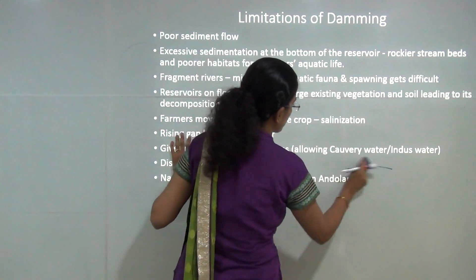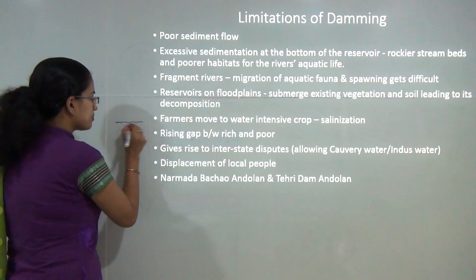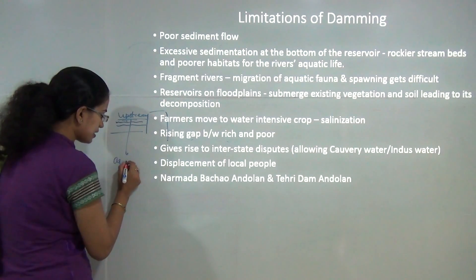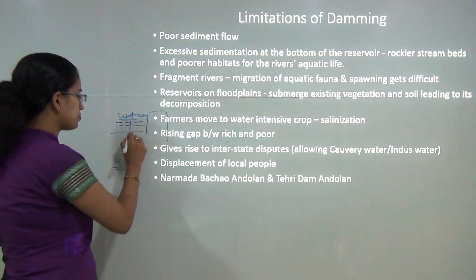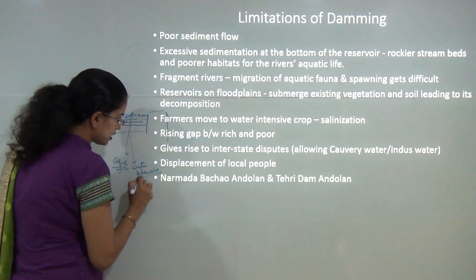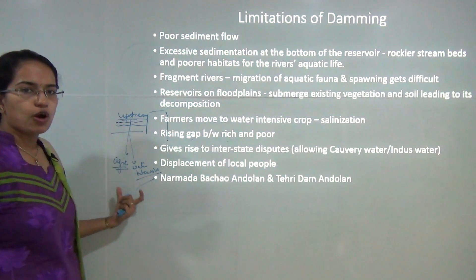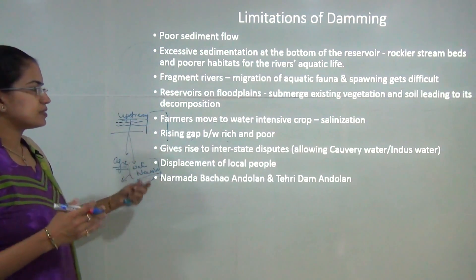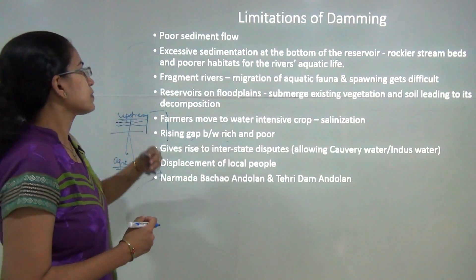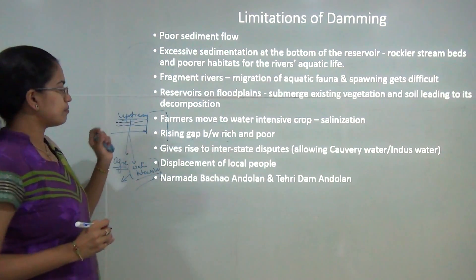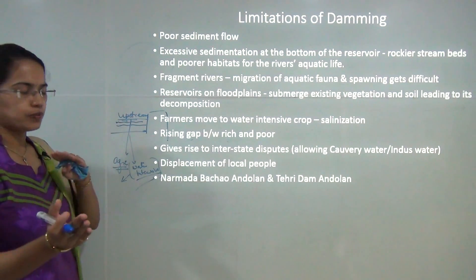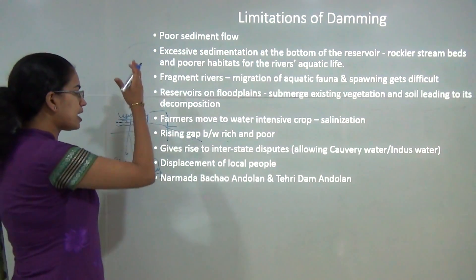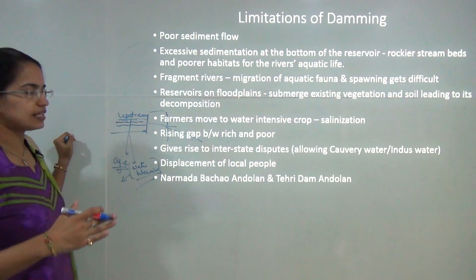Since you are creating a dam on a naturally flowing river, immense water is stored in the upstream area and used in nearby agricultural lands. Growing water-intensive crops like rice close to multi-valley projects leads to problems of salinization. Many dams lie between state borders, causing interstate disputes. Excessive sedimentation takes place at the bottom of the reservoir. The river is fragmented into upstream and downstream sections, making migration of aquatic flora and fauna difficult — an artificial boundary is created preventing movement of animals and plants.